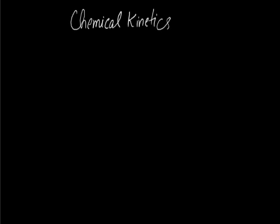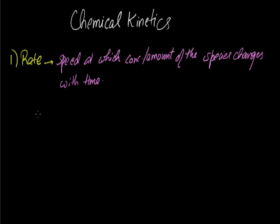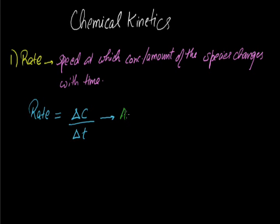Let us look at a few terminologies used in chemical kinetics. The first one is rate. Rate of reaction of a species in a chemical reaction is the rate at which concentration or amount of the species changes with time. Mathematically, rate is defined as rate equals to change in concentration divided by change in time. This is known as average rate.